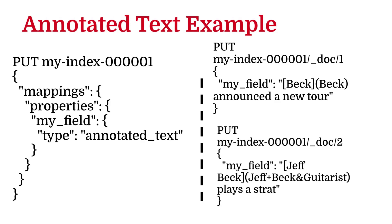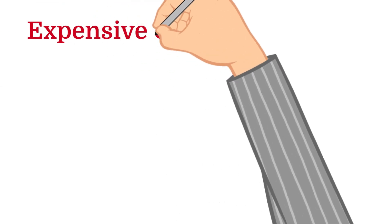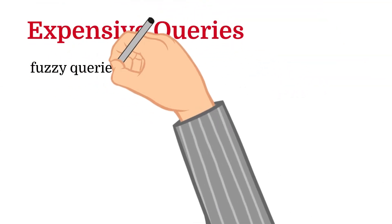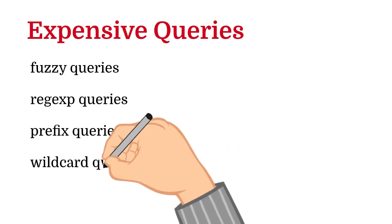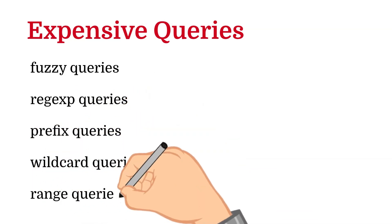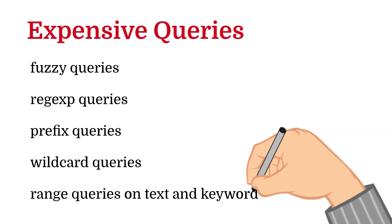Another example of expensive queries are those queries that have a high upfront cost such as fuzzy queries, regex queries, prefix queries, wildcard queries, range queries on text and keyword fields. There are two more ways where allow expensive queries are available. I leave it up to you. Leave a comment once you find that out.